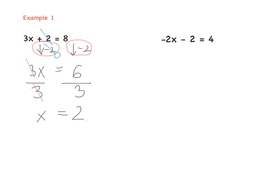The next question is very similar but we have minus 2x minus 2 equals 4. The first step is to get rid of minus 2. What do we do to get zero? Let's add 2 — so plus 2 and plus 2 to keep it in balance all the time. Then minus 2 and plus 2 gives you zero, so we have just minus 2x equals 4 plus 2, which is 6.